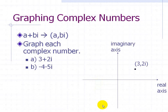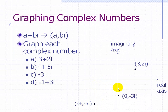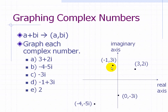Next, -4 - 5i is shown here. Then -3i is shown here. Then -1 + 3i is shown here. And finally, 2 + 0i — you can think of this as just a real number, 2, having no imaginary component, so here it would just be 2 and 0i.